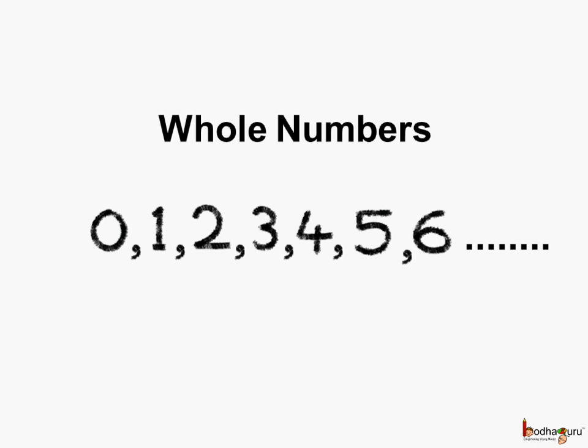What are whole numbers? If we include 0 to the counting numbers, we get the whole numbers. So 0, 1, 2, 3, 4, 5, 6, and so on constitute the whole numbers.